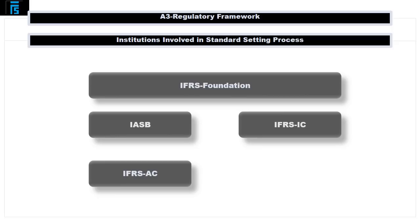Let's start with the IASB, which is at the very center of the standard-setting process, having sole responsibility for issuing International Financial Reporting Standards. The goal of the IASB is to develop a single set of high-quality, understandable, and enforceable accounting standards. Having said this, the IASB lacks the legal authority to enforce compliance with the standards it develops, making it necessary to cooperate closely with national authorities. To make this process more efficient, representatives of national standard setters are in fact represented on the board.